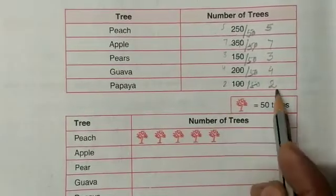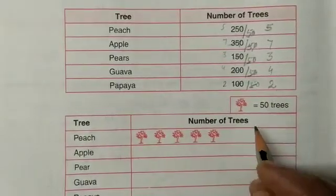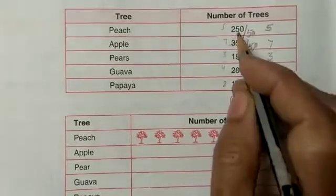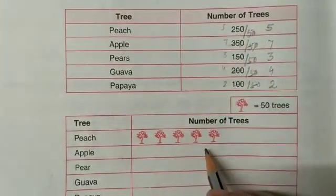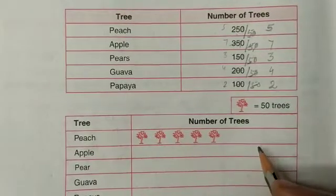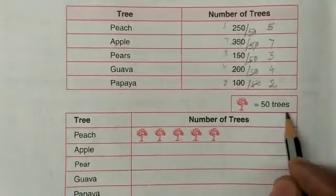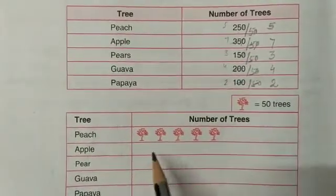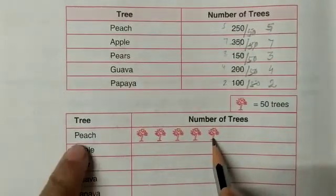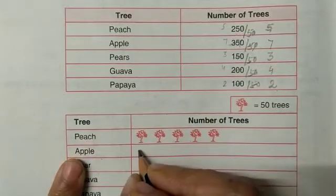Why did we do this? Because it's very difficult to draw 250 trees in your book — it is time consuming and requires a full notebook. That's why we take one tree equal to 50 trees. So you can see there are five trees for peach: 1, 2, 3, 4, 5. Likewise, apple trees are 7.